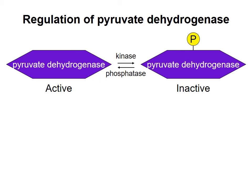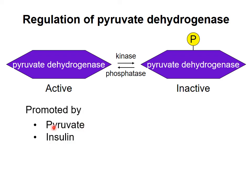Which form of pyruvate dehydrogenase is prominent in the cell depends on cellular conditions. The presence of insulin in the bloodstream, which represents high blood glucose, or the buildup of pyruvate in the cell, are going to promote activity of the phosphatase to dephosphorylate the enzyme and activate pyruvate dehydrogenase. This makes sense because both of these represent a condition where you've got lots of starting material for this reaction, and so the cell is going to want to use that starting material effectively.